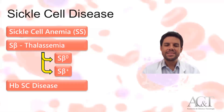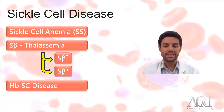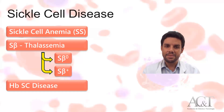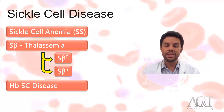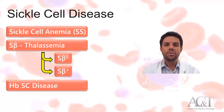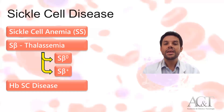As you may know, sickle cell disease includes some subtypes such as sickle cell anemia, which is the homozygous state called SS; S-beta thalassemia, which can be divided into S-beta zero — when the patient doesn't produce beta globin — and S-beta plus, when the patient produces some amount of this globin; and hemoglobin SC disease.